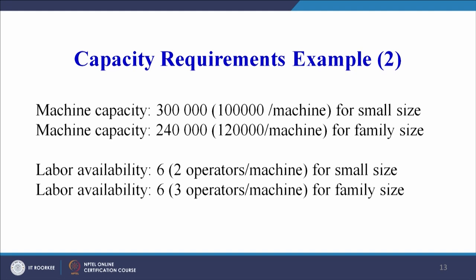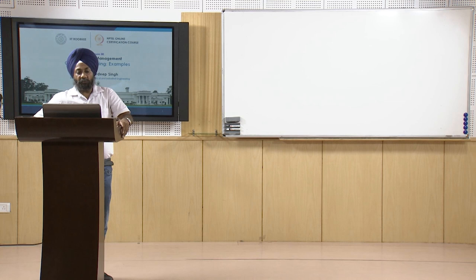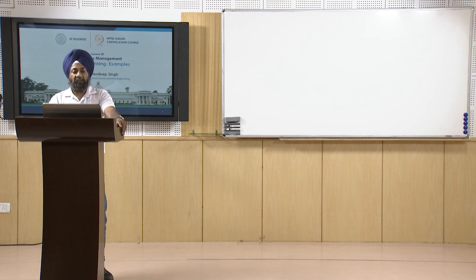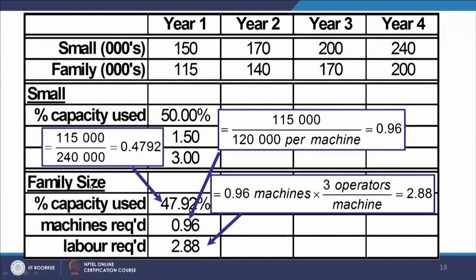The problem is summarized: overall machine capacity is three lakh small-size bottles per year, and two lakh forty thousand bottles for family-sized bottles per year. Labor availability is six each - for small-size bottles two operators per machine across three machines, and for family-size three operators per machine across two machines.